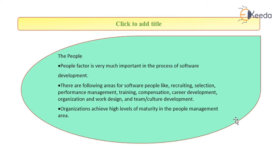It could be the user, it could be the project manager, it could be the developer, it could be the government making policies, or it could be the people belonging to areas like recruiting, selection, performance management, training, compensation, career development, organization, work design, team culture, and so on. Organizations achieve a high level of maturity in the people management area.